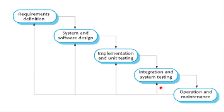This is the waterfall model diagram. You have requirement analysis and definition. You cannot go back — there is no backward flow initially. Then you go to system and software design. Then implementation and unit testing. In unit testing, you test a small part of the system independently to see if it is working. Then integration and system testing — you integrate the parts and verify they work together, which is integration testing, and testing the complete integrated system is system testing.